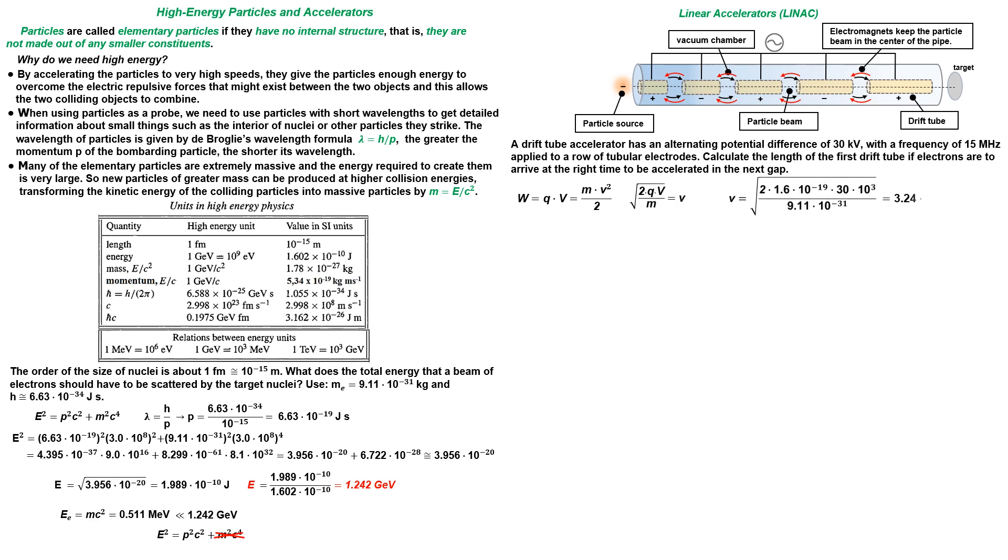We know the frequency, then making period the subject of the equation we get the time that a particle is in each tube, which can be calculated by taking half the period of the alternating potential difference.